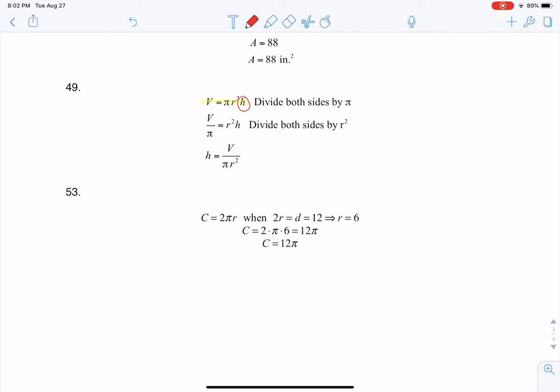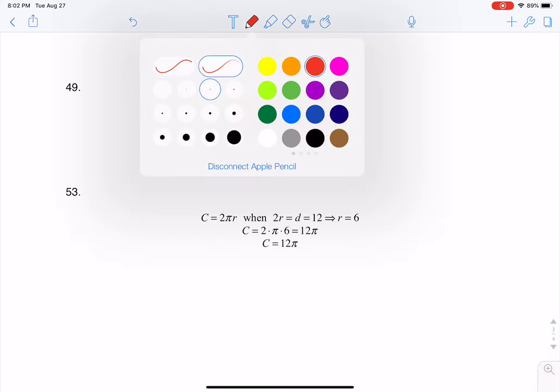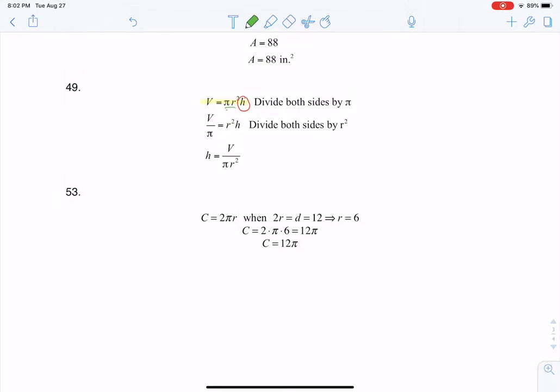So if I look on the right side of this equation, you see I have pi times R squared times H. So if I want to isolate H, I need to get rid of the pi and the R squared on the right side of the equation, and because they're being multiplied, I would undo that with division.